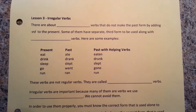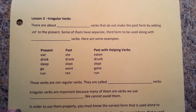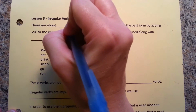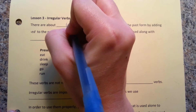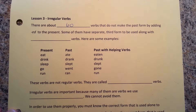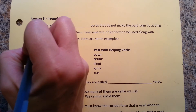Lesson three: irregular verbs. There are about 60 verbs that do not make the past form by adding -ed to the present. Some of them have a separate third form to be used along with helping verbs.